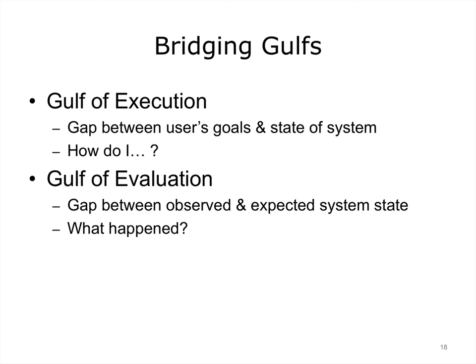There are two classes of problems that arise from any interaction with a system. The first, the gulf of execution, refers to any problem associated with performing the action — for example, clicking a button thinking it will take you to a specific page. The second class, the gulf of evaluation, refers to difficulties interpreting results after executing an action — for example, not knowing how to differentiate sponsored links from other results. This relates to the experience of the user but, most importantly, to the kind of feedback the system provides. Systems are variably informative, and determining whether system feedback is adequate to guide users is a very important part of usability evaluation.